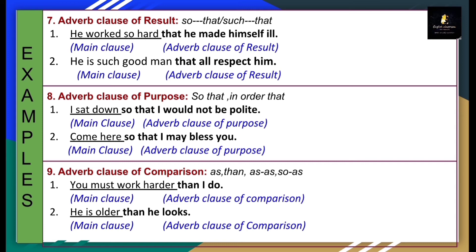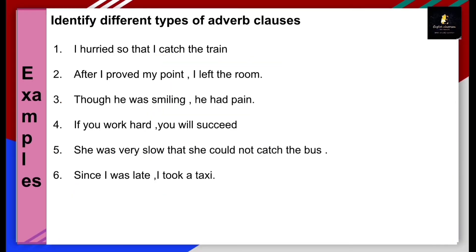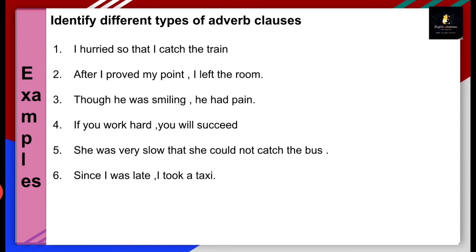So students, we have learned all nine types of adverb clauses. With the help of the chart, we can identify different types. Let's solve some more examples. 'I hurried so that I could catch the train.' 'I hurried' is the main clause. 'So that I catch the train' is your subordinate clause, and 'so that' denotes adverb clause of purpose.